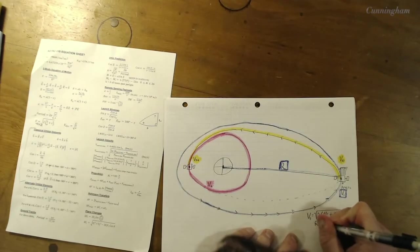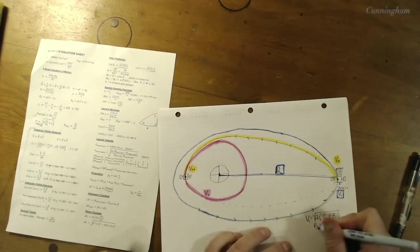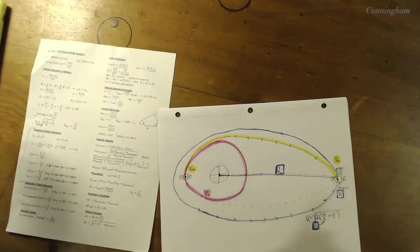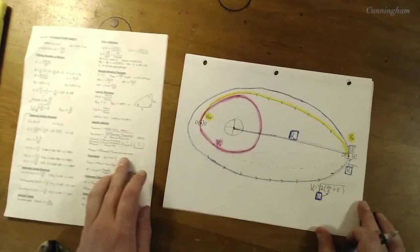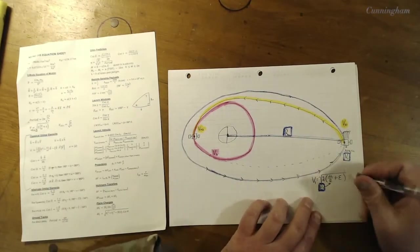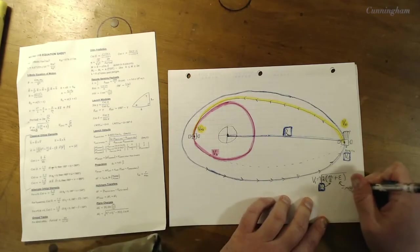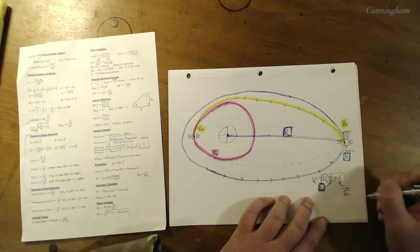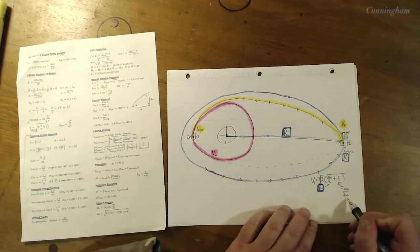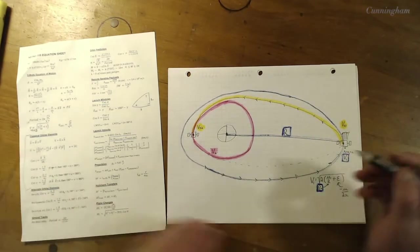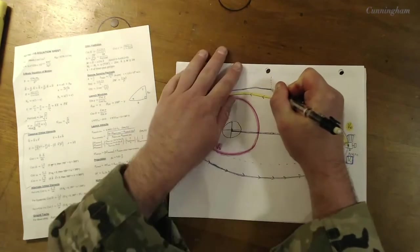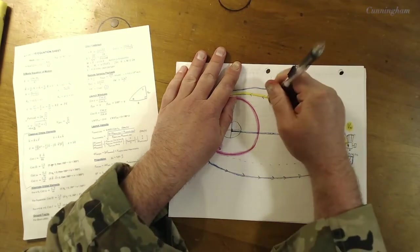That's where we begin, so the r that we're going to use is this r sub a that I highlighted in blue. Okay, epsilon, you guys remember specific mechanical energy. This is negative mu over 2a. Ah, now which a? This is going to be the semi-major axis of the mission orbit, not the transfer orbit.